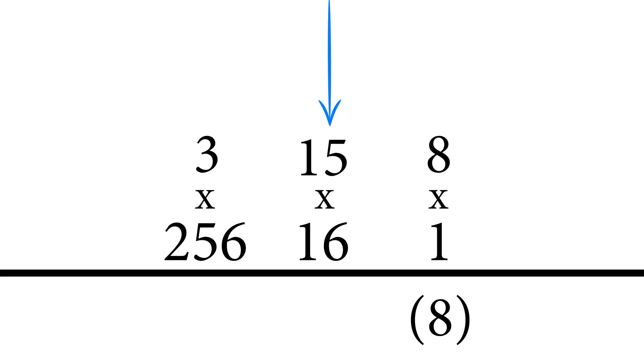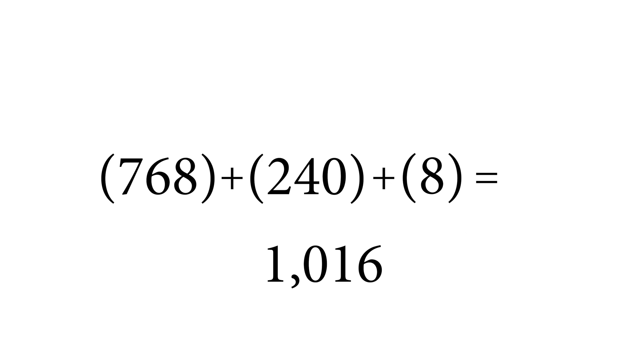So that is F is 15, so that is 15 times 16, and then the last one we have 3, that'll be 3 times 256. So 3 times 256 is 768, 15 times 16 is 240, and 8 times 1 is 8. You add all those up and you get 1016.